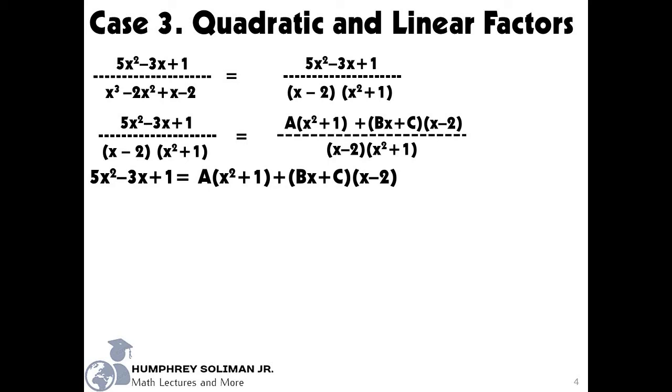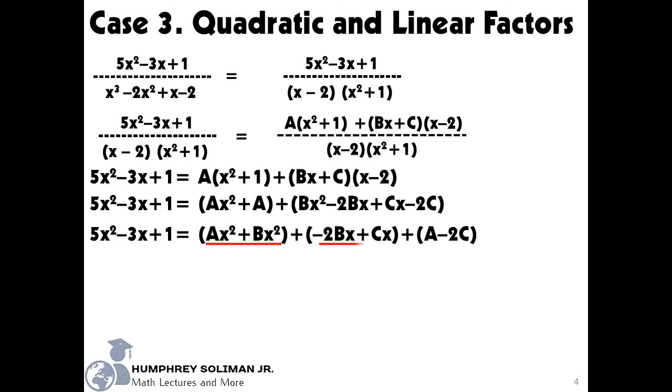And then, we can start simplifying our right side by multiplying the quantities bx plus c and x minus 2. After that, we can now distribute the variable a to x squared plus 1 carefully. Next, is to group together the terms with x squared, the terms with x, and the constant terms.